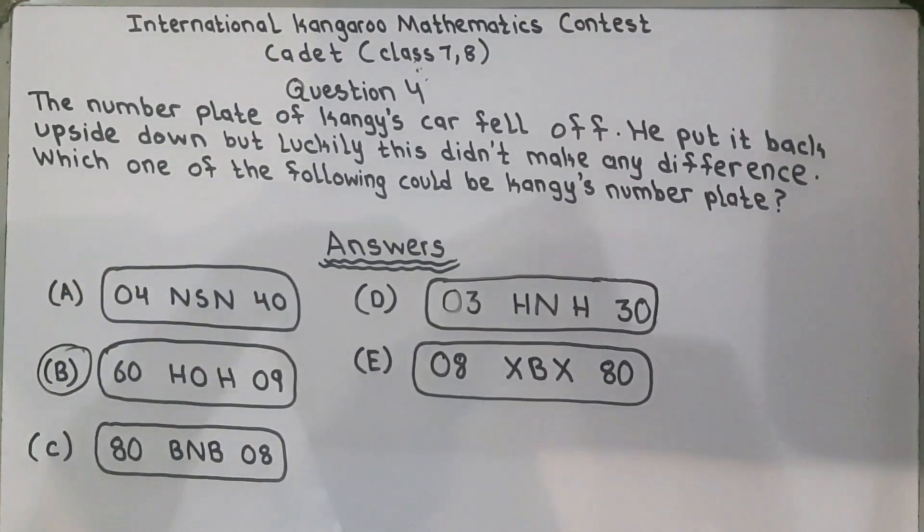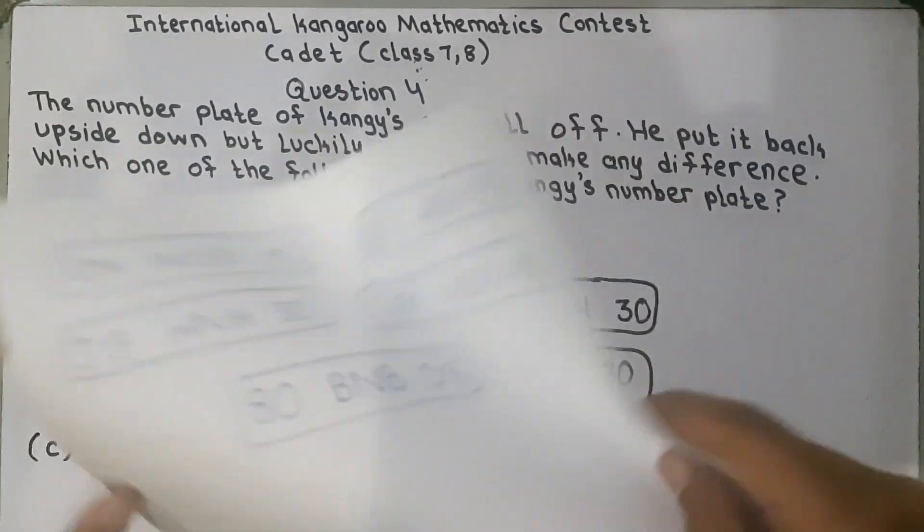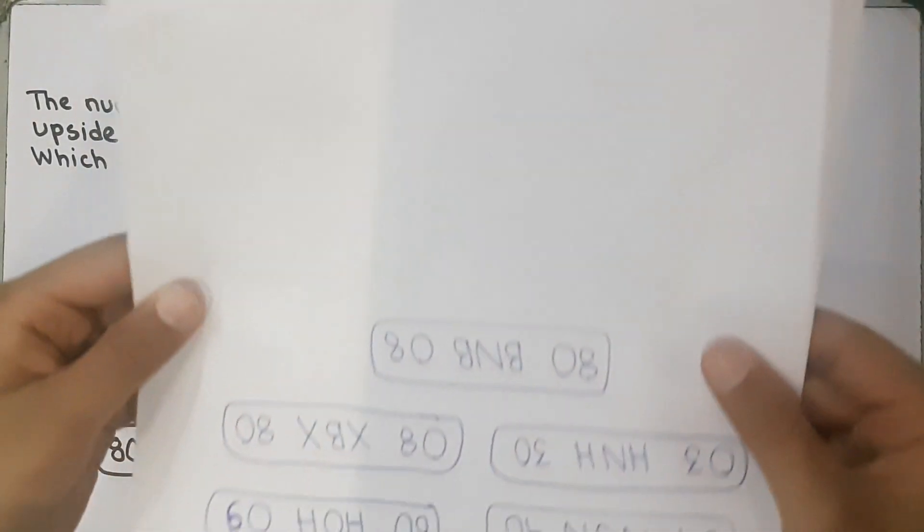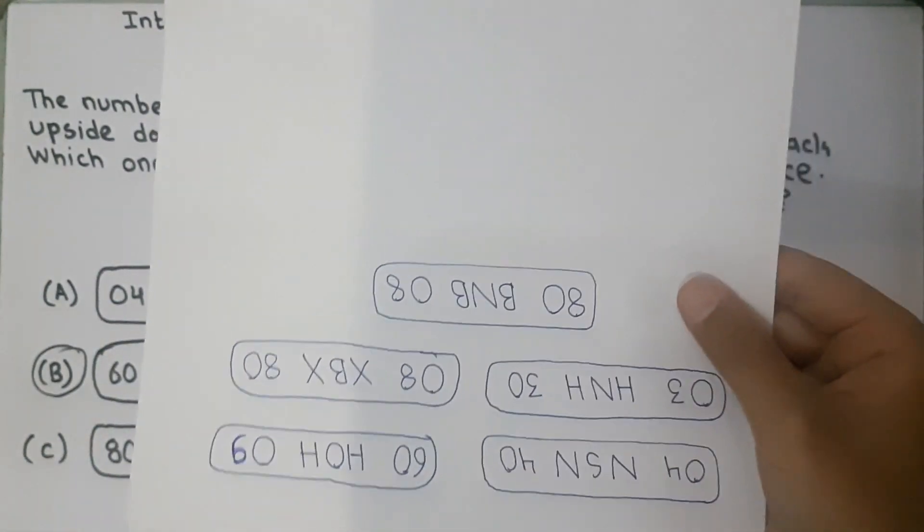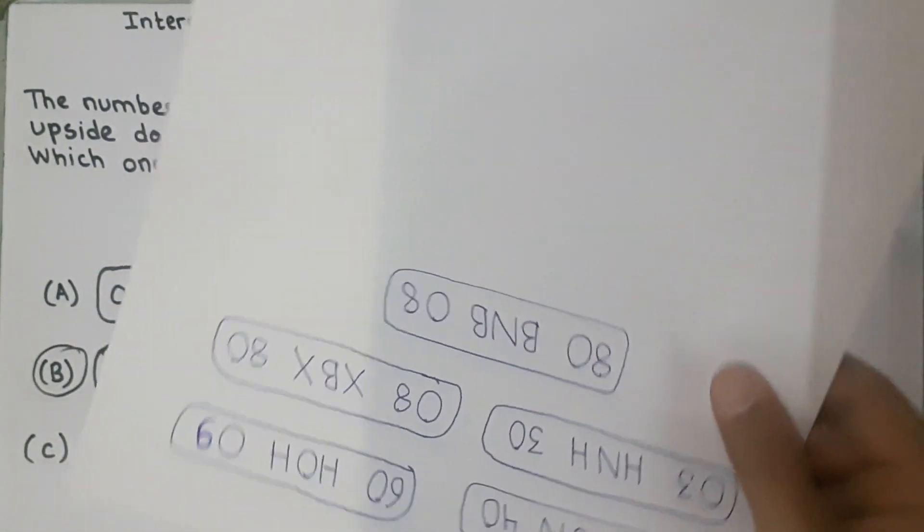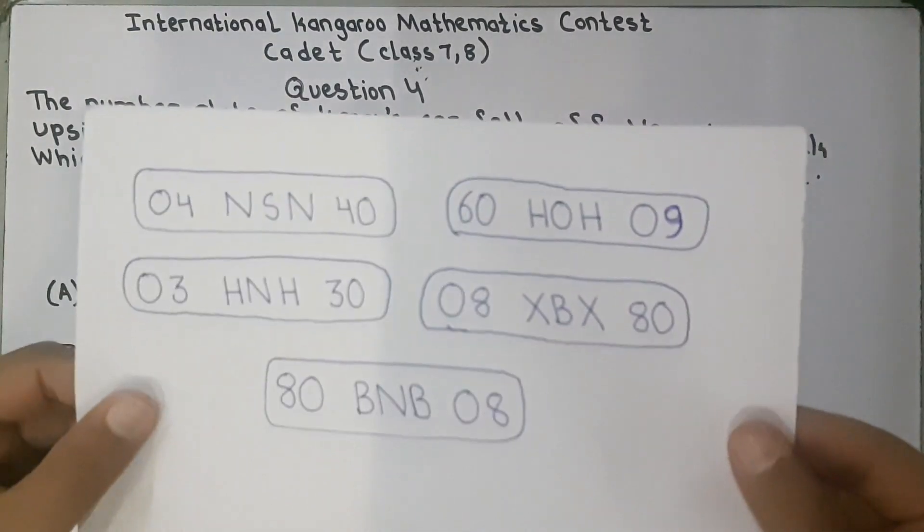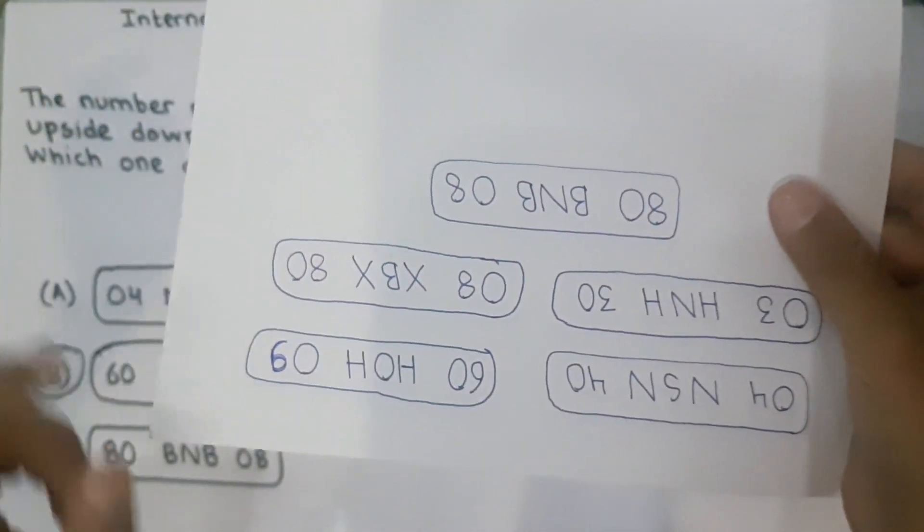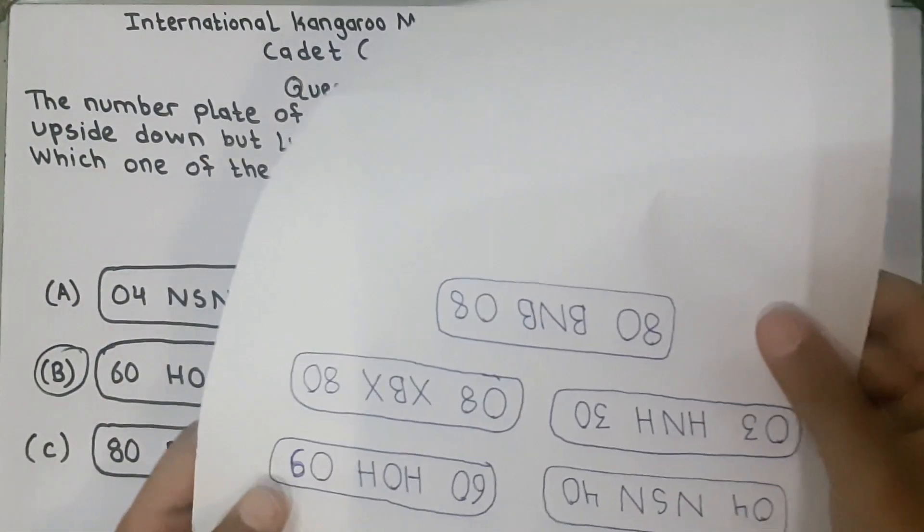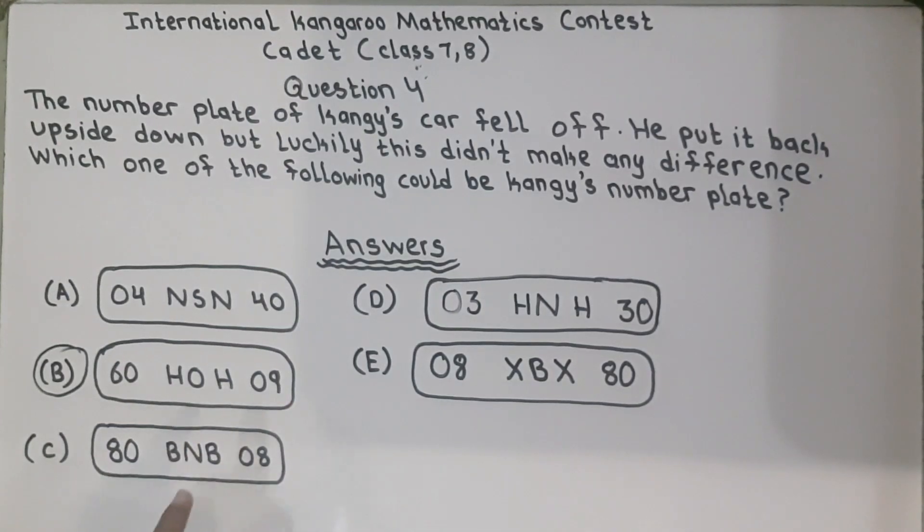The last option left is 60 HOH 09. And if we rotate it, it gives us 60 HOH 09. So this is Kangaroo's number plate. Because if we do like this, it is 60 HOH 09. And if we do it like this, it also shows 60 HOH 09. So this one is Kangaroo's number plate.